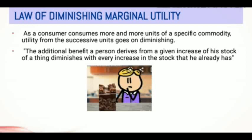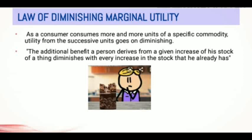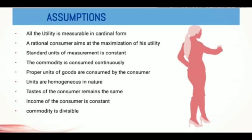Because you already had the ice cream, you do not have the same urge to have another. With the third ice cream, the satisfaction decreases even further. As you go on having more and more ice cream, the additional benefit you derive from each consumption goes on diminishing. This law is based on several assumptions: all utility is measurable in cardinal form; a rational consumer aims at utility maximization; the standard unit of measurement is constant; the commodity is consumed continuously; proper units are consumed; units are homogeneous; the consumer's taste remains the same; income is constant; and the commodity is divisible.